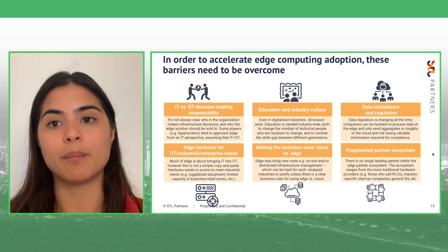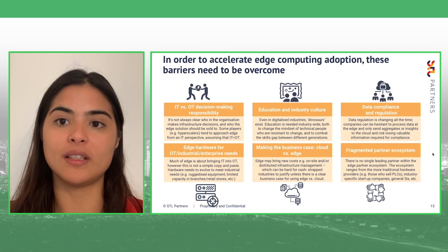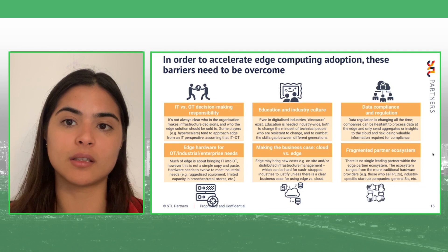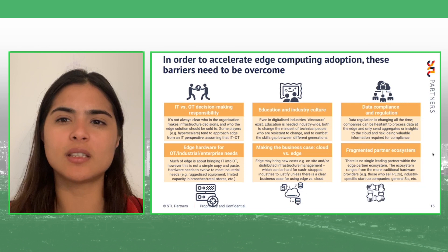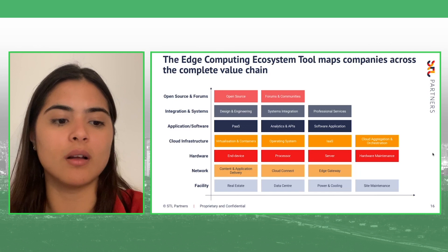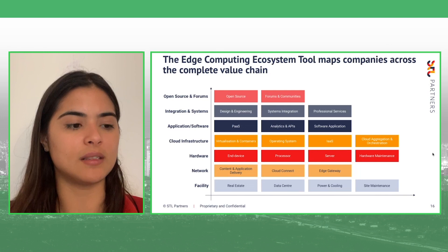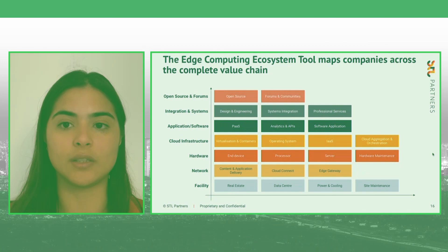The next challenge is making the business case. Enterprises need to think about what's going to be cloud versus edge — there is a cost associated with both. Many industries are already cash-strapped and highly competitive, so a clear business case for changing infrastructure is critical. Finally, the partner ecosystem is still fragmented. Edge is relatively new and it's not always clear who the leaders are or who to partner with. The value chain of edge includes facility, network or connectivity, hardware, software, infrastructure, and more — all needing to come together — with specialists in each domain, making it complex for enterprises to navigate.